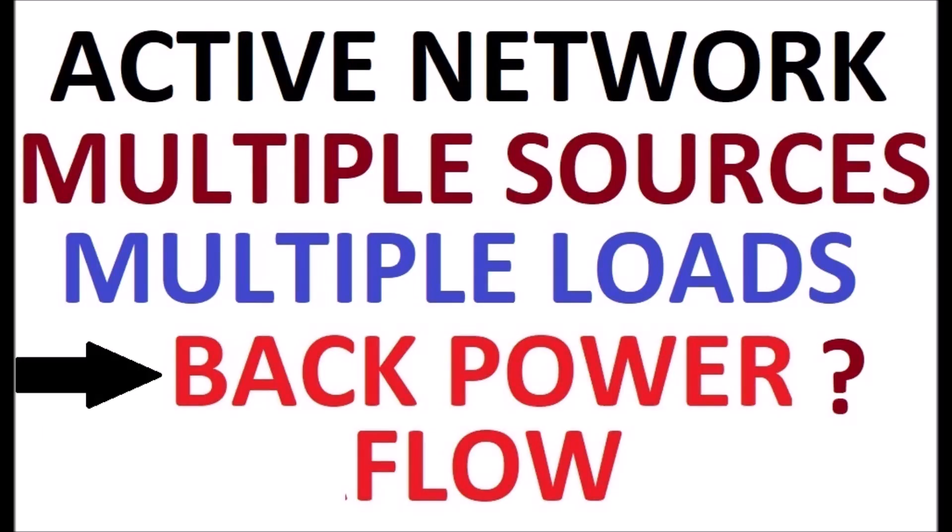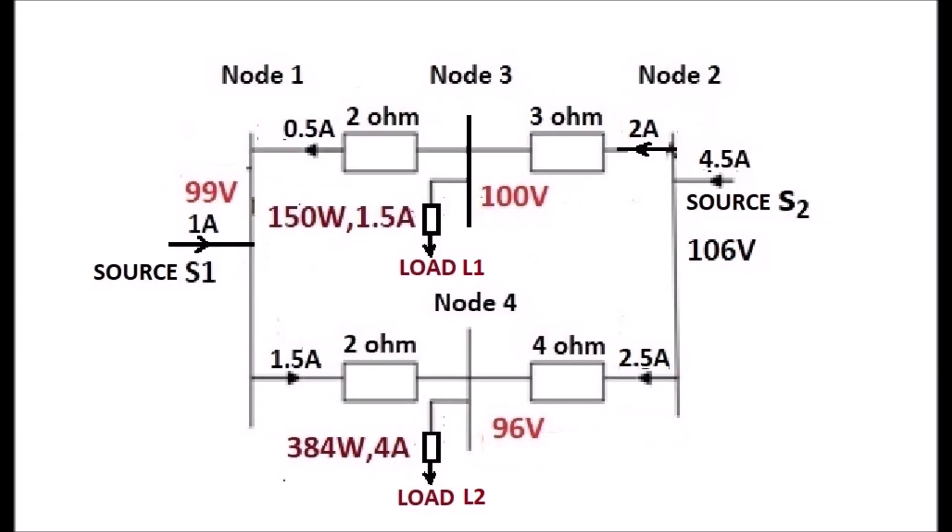What is back power? Refer to the display, it seems that there is no current towards the load L1 at node 3 from the source S1 at node 1. This does not mean that there is no power from source 1 to load 1.